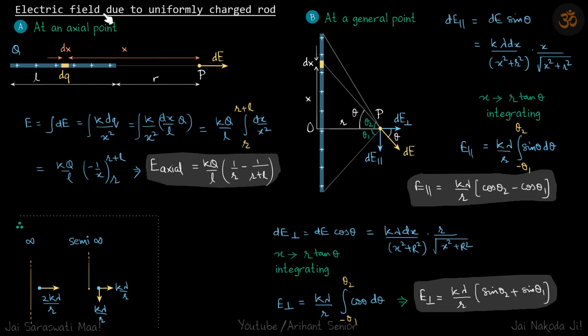So now we'll find electric field due to a uniformly charged rod at an axial point and at a general point. So for an axial point, let's say we have a finite rod of length L and one end of the rod is at a distance R from the point where we want to calculate the electric field.